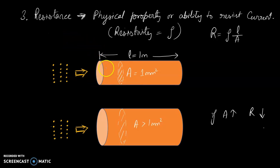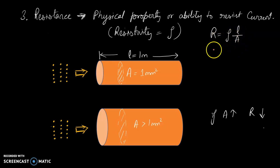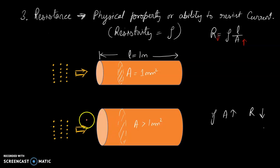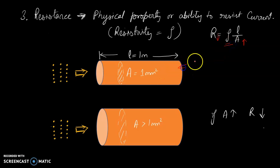So resistance can be defined as the physical property or ability to resist current. R is equal to ρL/A. The most important parts here are length and area. If area A increases, obviously the resistance will decrease — it is giving more area for the electrons to go, so that is good. Another important part is the resistivity of the material it is made of. This may be made of copper, aluminium, or silver.